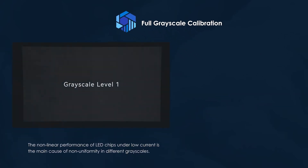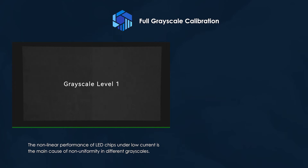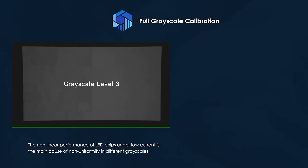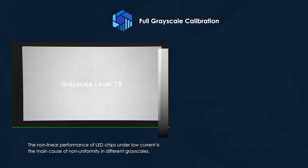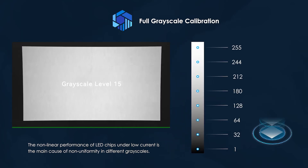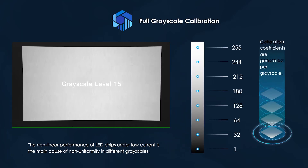As the distance between the centre of each pixel approaches a single millimetre or less, the power for each tiny lamp is lowered in order to maintain a constant luminous flux. And with less and less current, any non-linearity of an LED chip will stand out against the uniformity of the display. And this cannot be solved with just a one-layer calibration. As our graphic shows, Novastar's full grayscale calibration generates calibration coefficients for each grayscale.